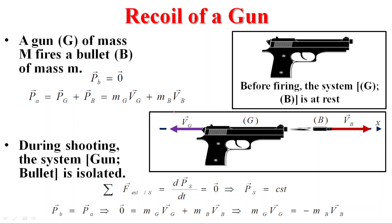Recoil of a gun is one of the applications of conservation of linear momentum. During the explosion, the system is isolated. Similarly, during shooting or firing, the gun-bullet system is isolated. We write Newton's second law: sigma F equals dP/dt equals zero.